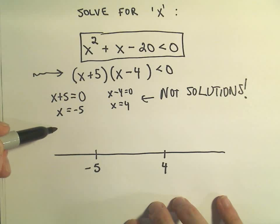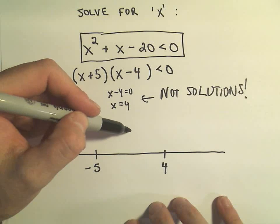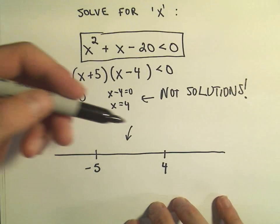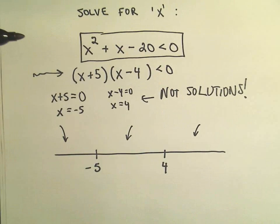And then we're going to have to take a number smaller than negative 5, plug it into the inequality. We'll take a number in between negative 5 and 4, plug it into the inequality, see if it works. And we'll take a number bigger than 4, plug it into the inequality, see if it works.